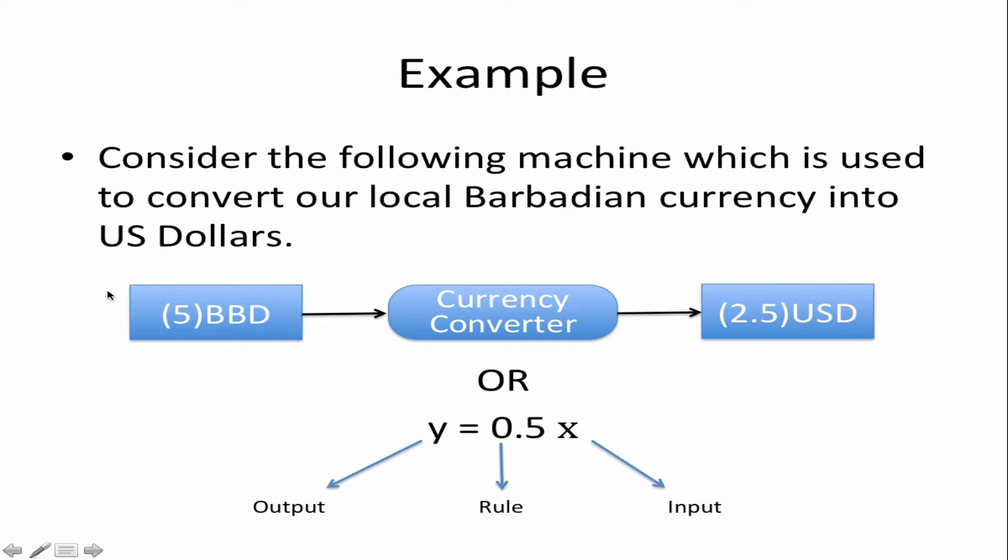An example we're going to use currency. Consider the following machine which is used to convert our local currency into US dollars. 5 Barbadian dollars goes into the machine, it is converted, and you have an output of 2.5 US dollars. We know that the currency exchange rate is about half Barbadian dollars to US.